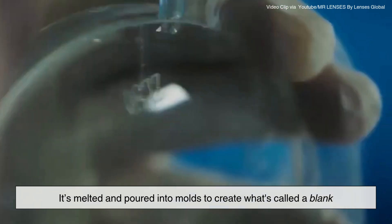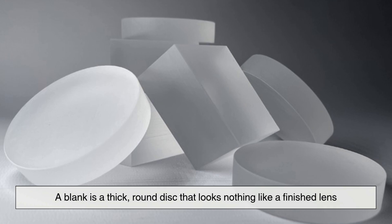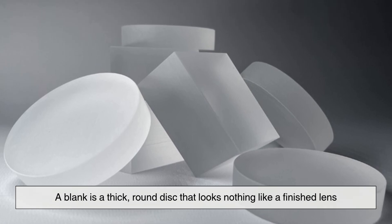Once the raw material is ready, it's melted and poured into molds to create what's called a blank. A blank is a thick, round disc that looks nothing like a finished lens. It's cloudy, rough, and oversized, but it holds all the potential to become something special.